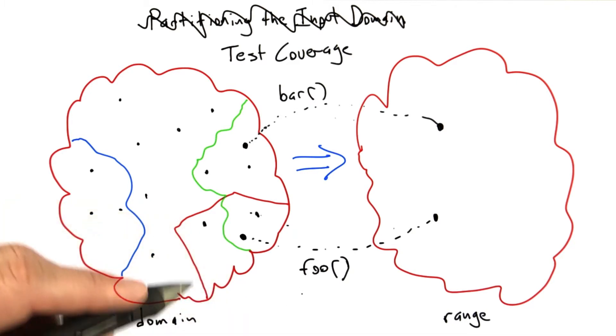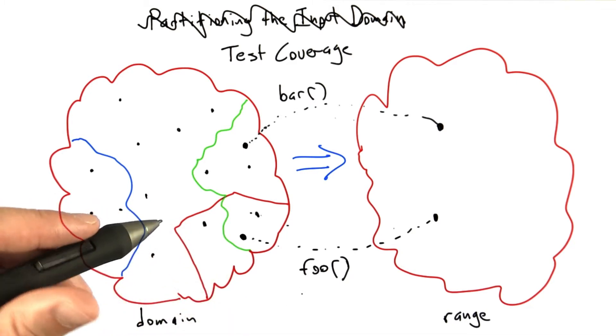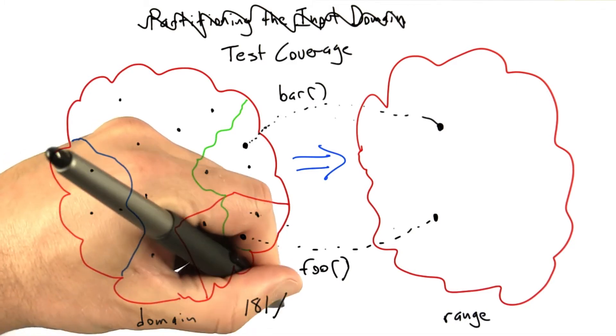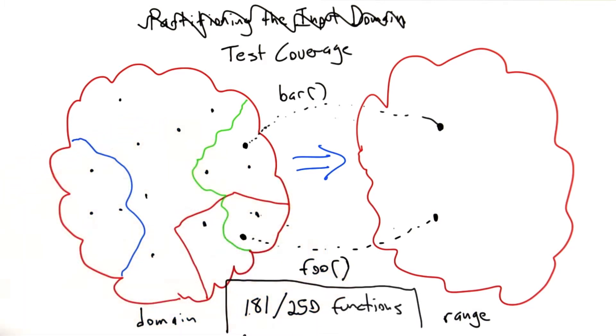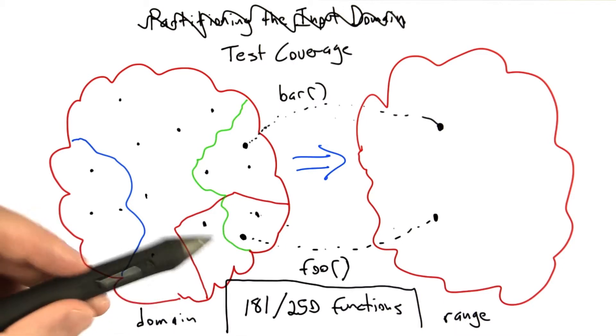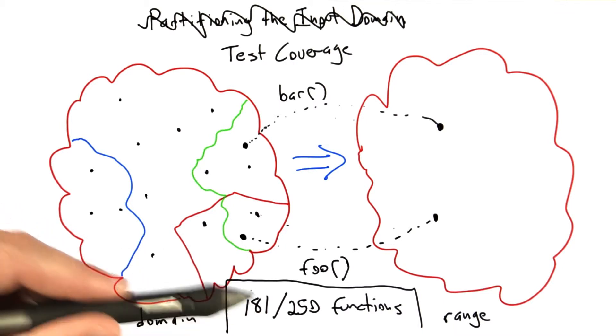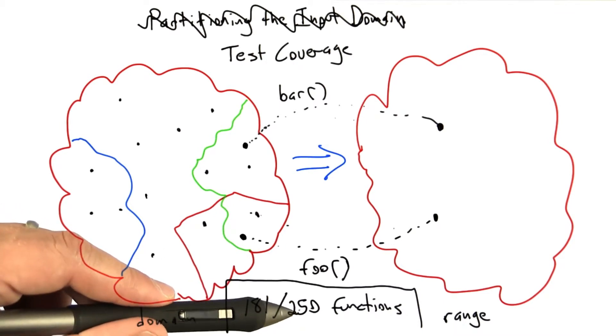So, for example, some sort of a tool that's watching our software execute can say, well, we've called 181 out of 250 functions. And so what this kind of a score is called is a test coverage metric. It means that our test cases so far have covered 181 of the functions out of the 250 that we implemented.